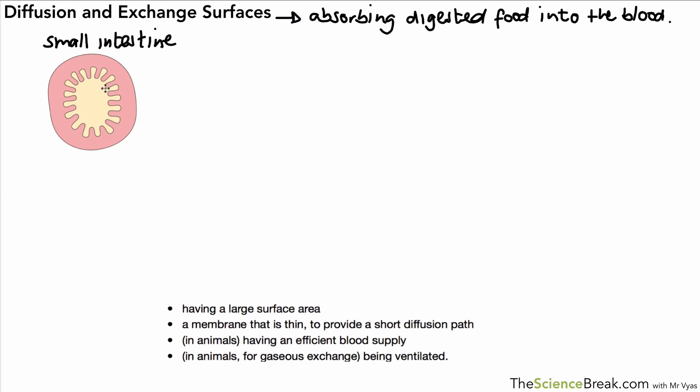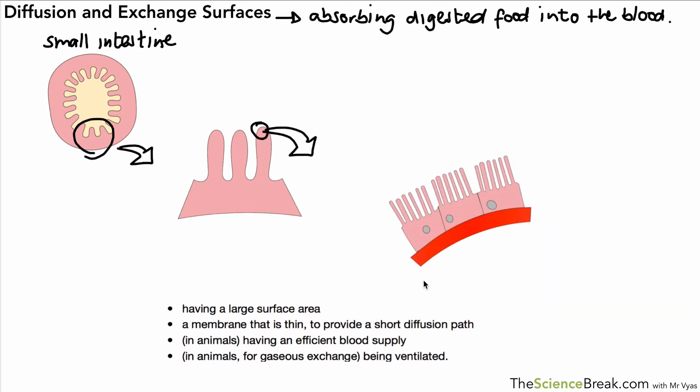So there's our small intestine and you can see on the inside there are these finger-like projections that poke inwards and if you magnified those they might look a bit like that but we can go yet further and magnify that section there, make that a lot bigger, and you would actually see there are even tinier finger-like projections along the surface of that section there.